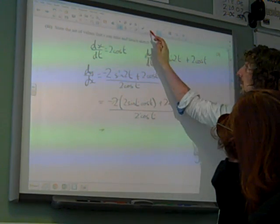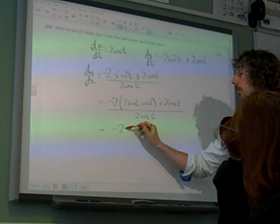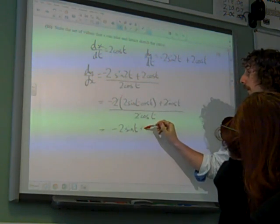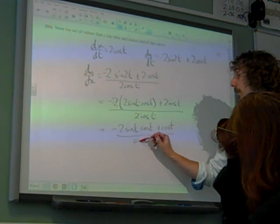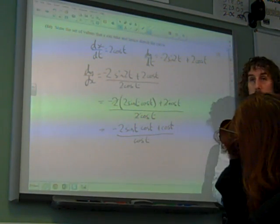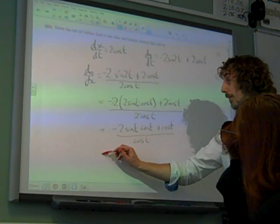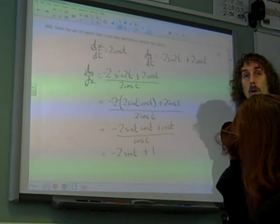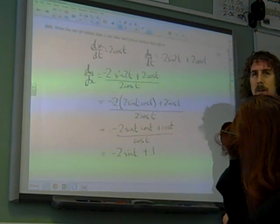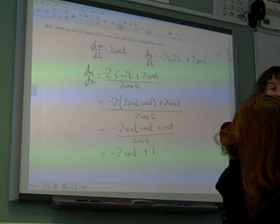So we've got cos(t) as a common factor top and bottom. We've got minus 2 times sin(t), cos(t) plus cos(t) over cos(t). We've now got a common factor of cos(t) all the way through. So we can divide top and bottom by cos(t) to leave us with minus 2sin(t) plus 1. And that's what we're supposed to show. It was all about that identity, the 2sin(t)cos(t) identity.